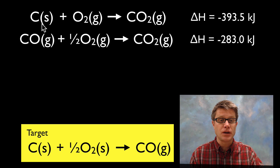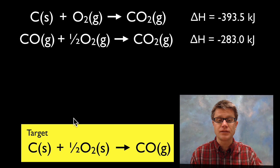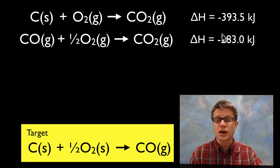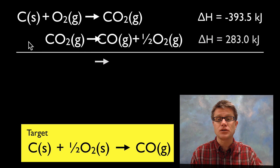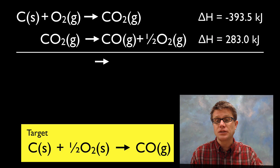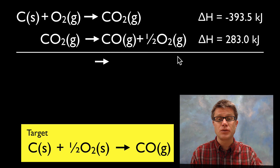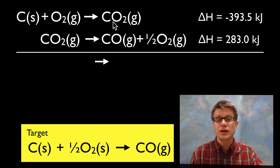Looking at this equation, I've got carbon monoxide on the left side, but I eventually want it on the right side. I can see two exothermic reactions here. The first thing I can do is simply switch one reaction around — that's totally legal. Watch what happens to my delta H: my delta H now becomes a positive value. Now if I look, I've got carbon dioxide on the left and carbon dioxide on the right side, so I can actually cross those off.